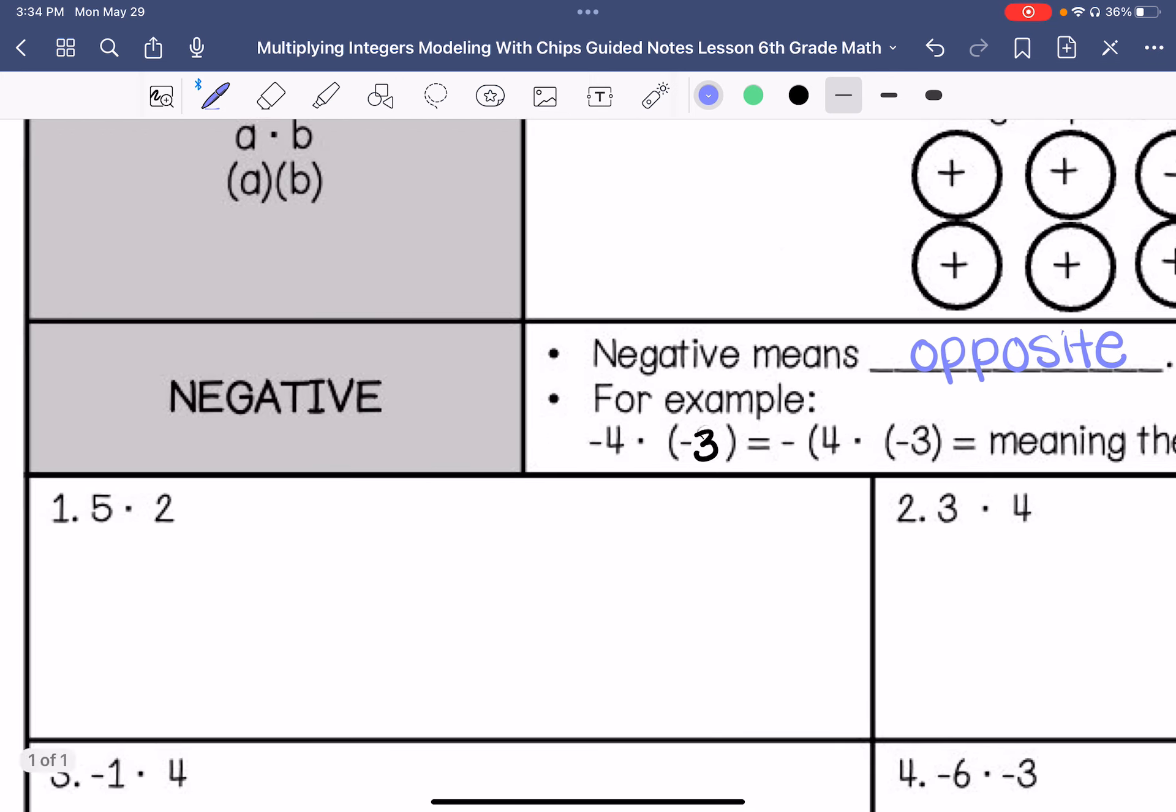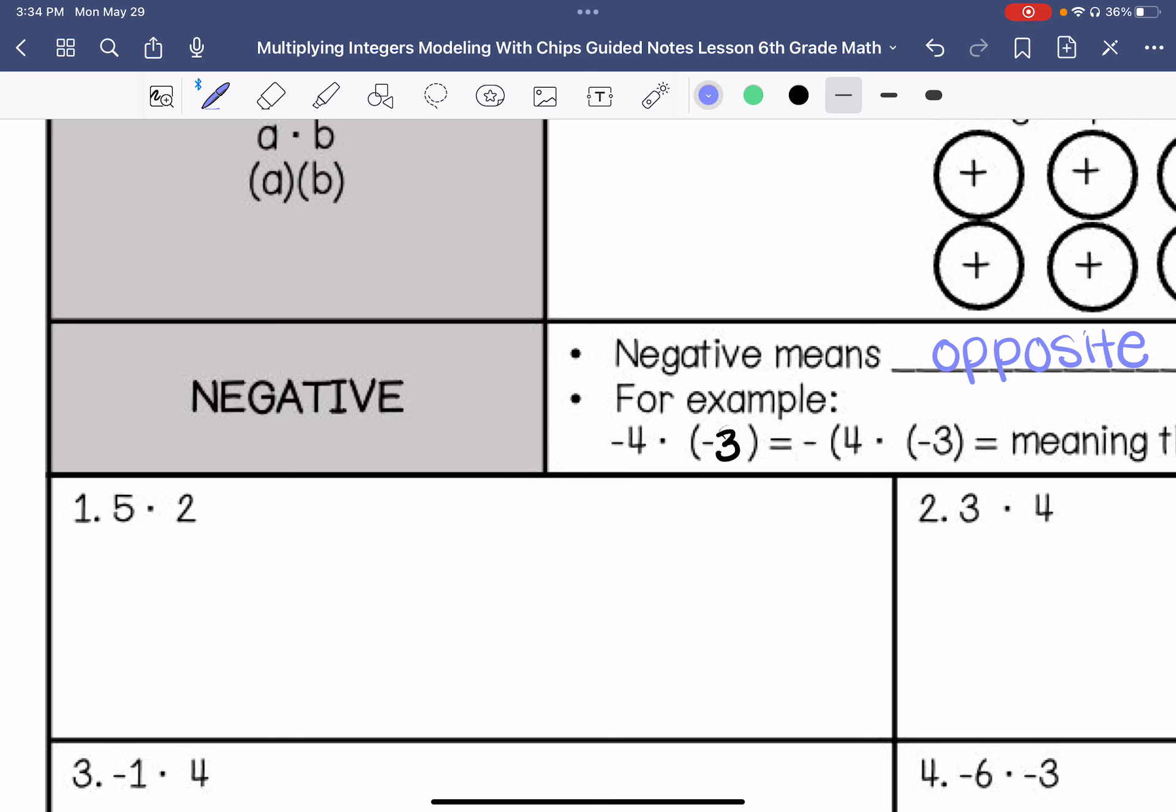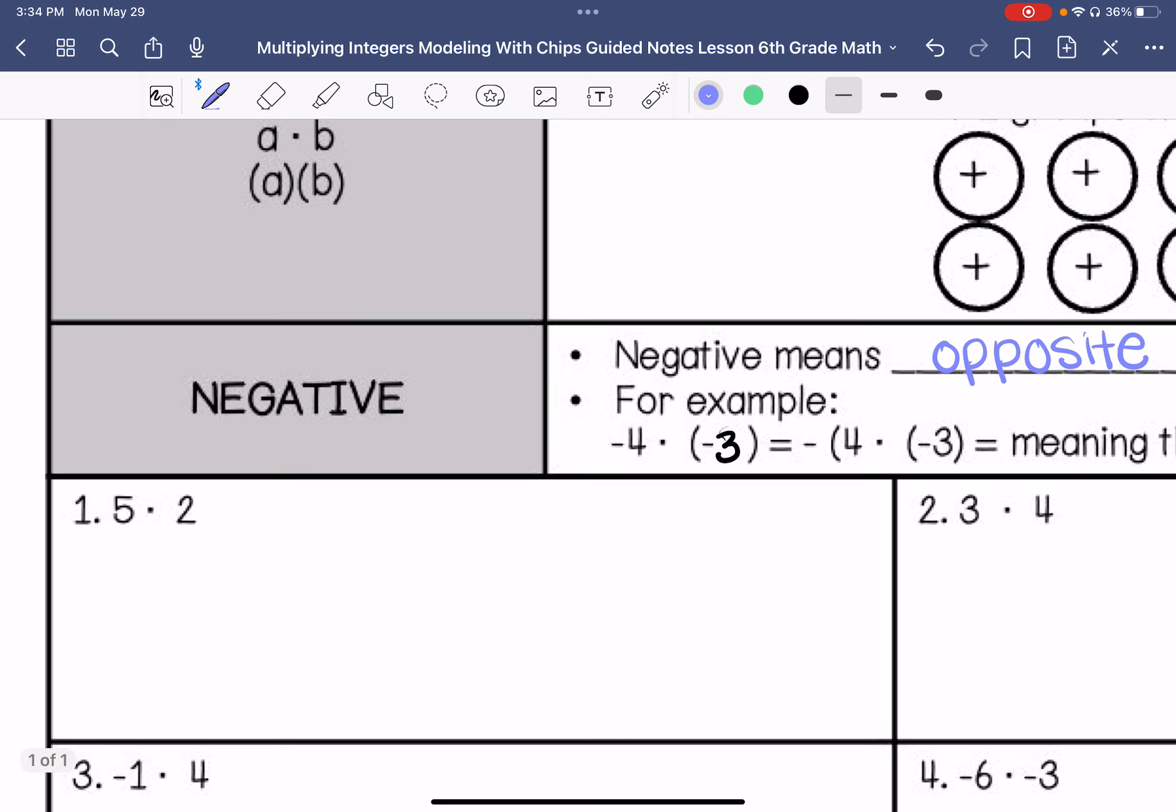Alright, number 1. We have 5 groups of 2, and they are positive.